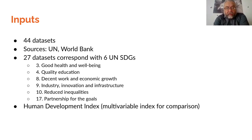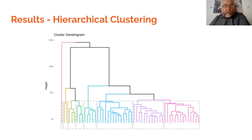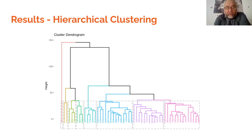Our results are also compared with the multi-variable Human Development Index. This is the dendrogram result — a graph presenting not only groups or clusters, divided by different colors, but also the way of clustering: building boundaries between clusters and distances of particular countries.